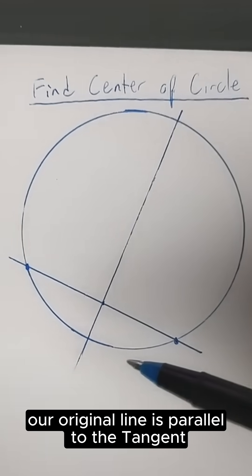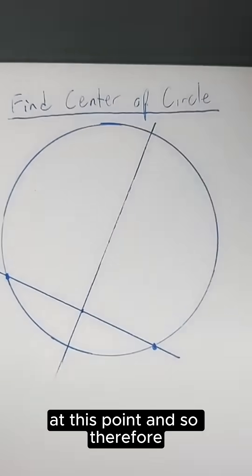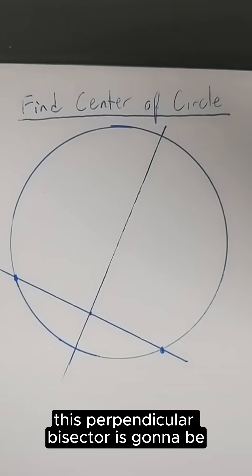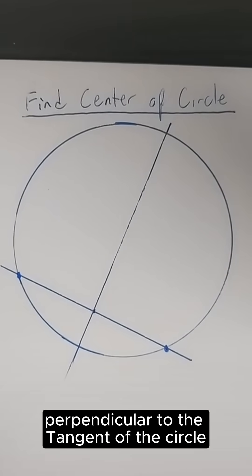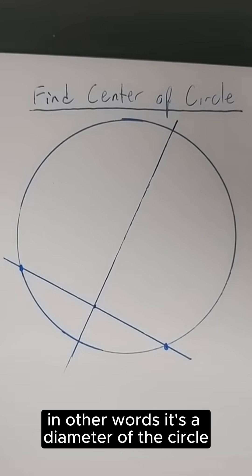Now we know that our original line is parallel to the tangent at this point, and so therefore this perpendicular bisector is going to be perpendicular to the tangent of the circle. In other words, it's a diameter of the circle.